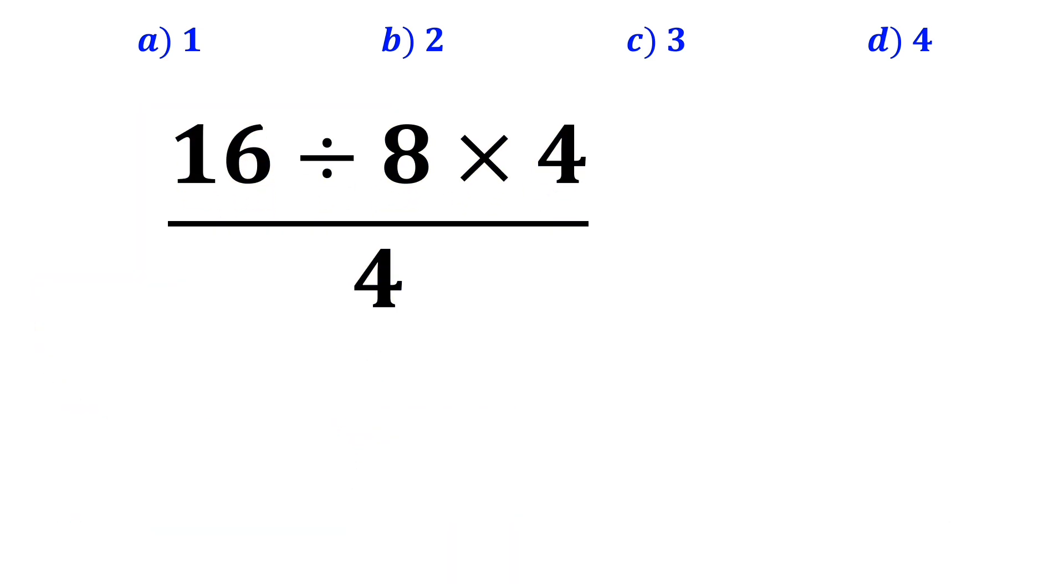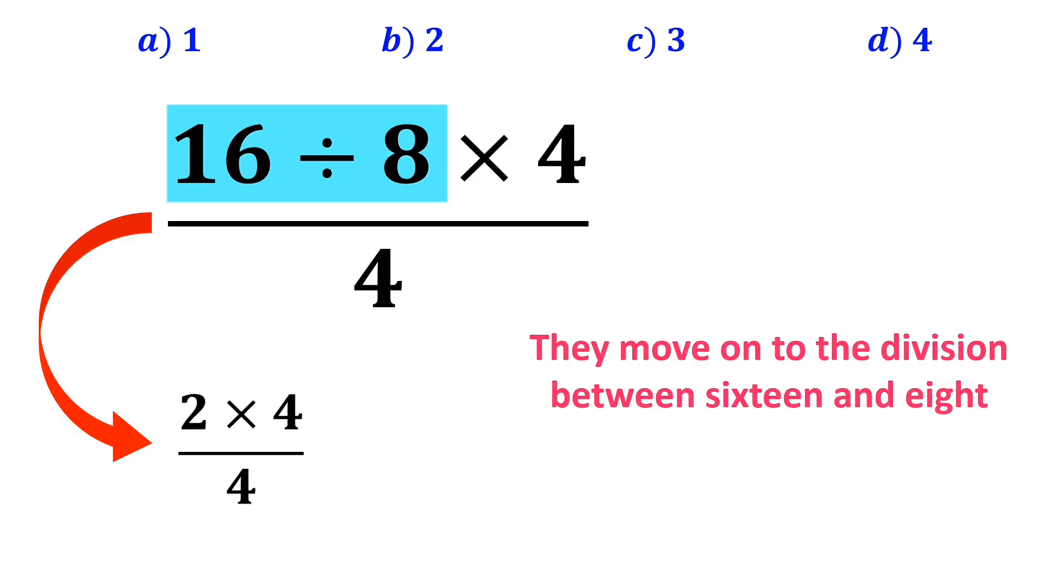In the next step, they move on to the division between 16 and 8 and simplify the expression to 2 times 4 over 4. Then they say the 4s in the numerator and the denominator of this fraction cancel each other out, and the final answer will be 2.